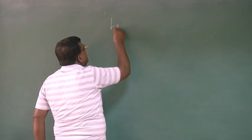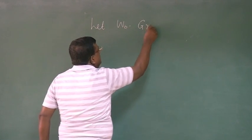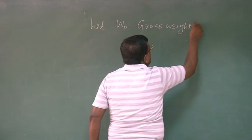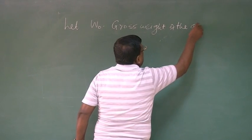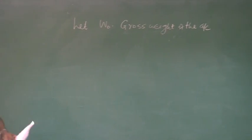Let us say W₀ is the gross weight of the airplane or the aircraft. That means it has structure weight, payload, fuel, everything.